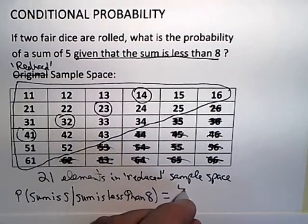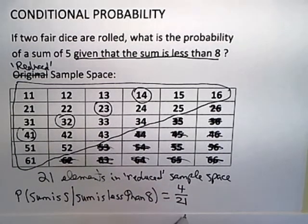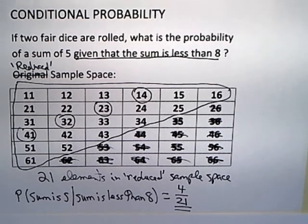So this answer is 4/21. And again, if that fraction reduces you would reduce it, but here it doesn't. So the probability that the sum is 5 given that the sum is less than 8 is 4/21.